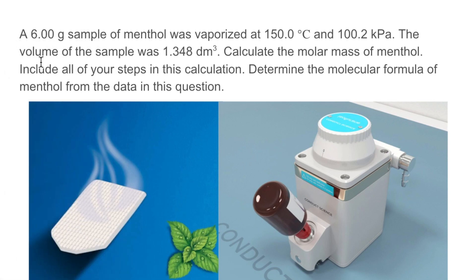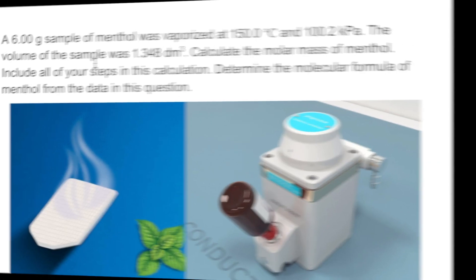A 6 gram sample of menthol was vaporized at 150.0 degrees Celsius and 100.2 kilopascals of pressure. The volume of the sample was 1.348 dm cubed. Calculate the molar mass of menthol — include all of your steps in the calculation. And finally, determine the molecular formula of menthol from the data in the question.